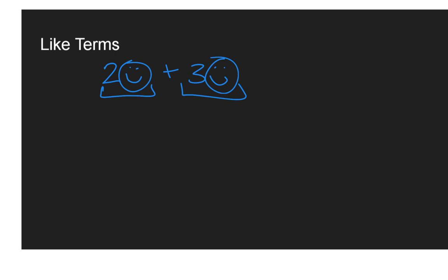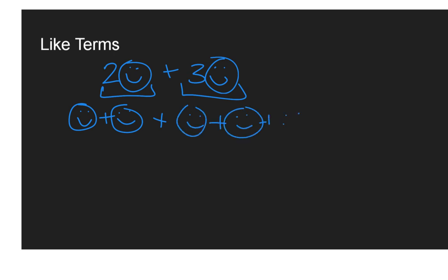So if I have two blue smiley faces, that's going to turn into one blue smiley face plus another blue smiley face — that's two blue smiley faces. That takes care of this first term in the expression. Now to that I'm adding three blue smiley faces: one plus one more, plus the third. How many blue smiley faces is that total? That's five blue smiley faces. So two blue smiley faces plus three blue smiley faces is equivalent to five blue smiley faces. What we just did is combine like terms.